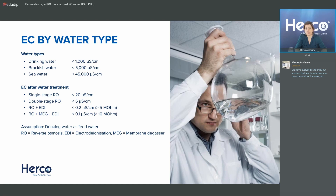If that is not sufficient because you have stricter requirements, the easiest option is to use high rejection membranes to go down a bit more. If you need less than 5 microsiemens per centimeter, you use a double-stage RO — we call that a permeate staged RO — and this is the unit we're going to talk about in this session. For still lower values, say under 0.2 or 0.1 microsiemens per centimeter, you would need electrodeionization (EDI) as a second stage after your RO.